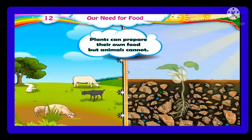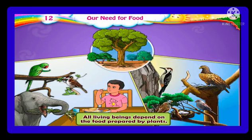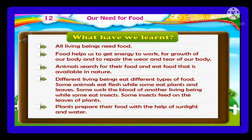Plants can prepare their own food but animals cannot. All living beings depend on the food prepared by plants. Now let us remember what we have learned in this lesson. First, all living beings need food. Second, food helps us to get energy to work, for growth of our body, and to repair the wear and tear of our body. Third, animals search for their food and eat food available in nature. Fourth, different living beings eat different types of food — some eat flesh, some eat plants and leaves, some suck blood, and some eat insects. Fifth, plants prepare their food with the help of sunlight and water. Thank you.